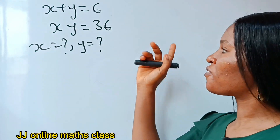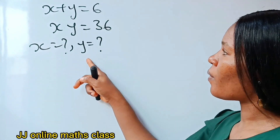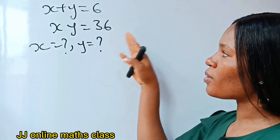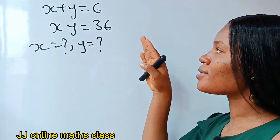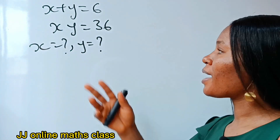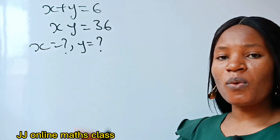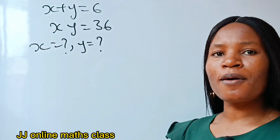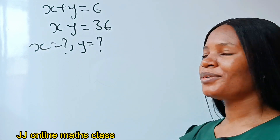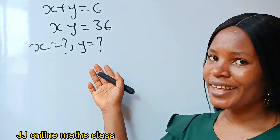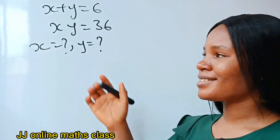We are asked to solve for x and y if x plus y equals 6 and xy — that is x multiplied by y — equals 36. Welcome back to my channel. Let's get straight to the exercise.